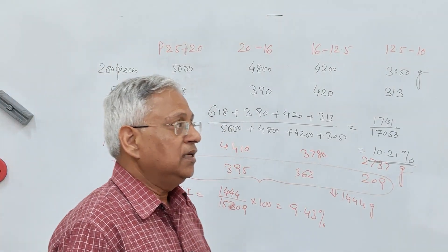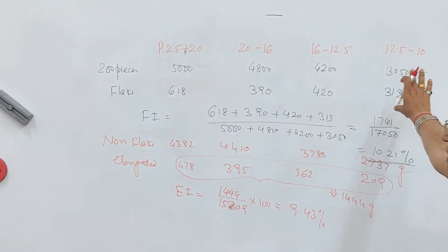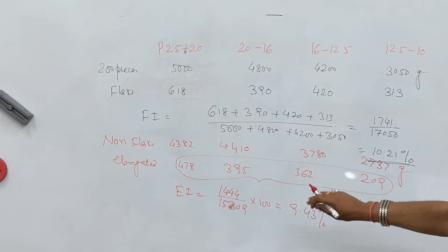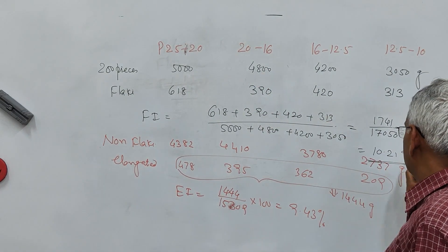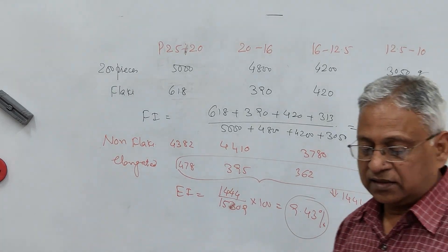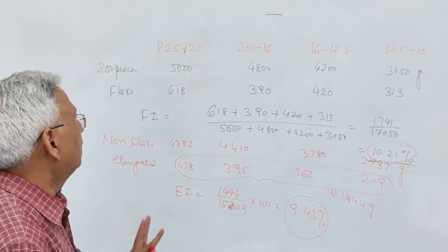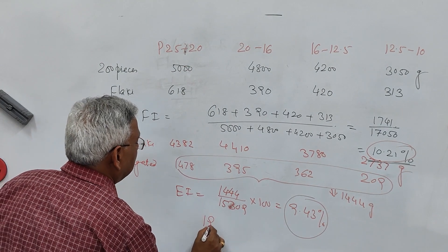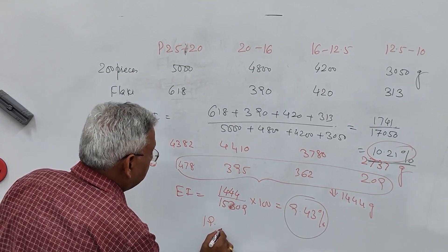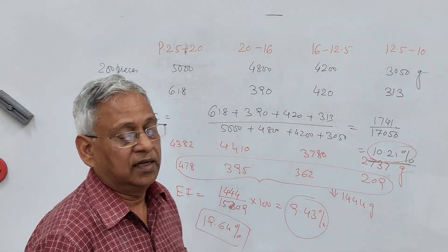The Combined Flakiness Elongation Index for the entire sample of aggregate being used in bituminous concrete or any other layer is 10.21 + 9.43 = 19.64%. So 19.64% is your combined flakiness elongation index for this aggregate.